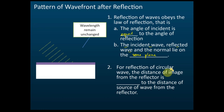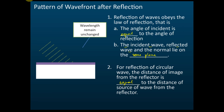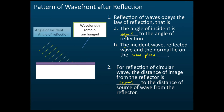For reflections of a circular wave, the distance of the image from the reflector is equal to the distance of the source. I'll give you the answer first and then discuss it in the next slide — that covers both reflections of a plane wave and a circular wave.